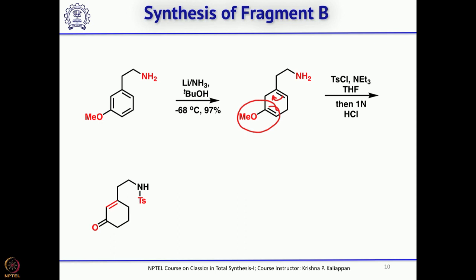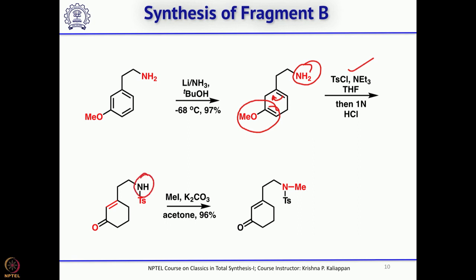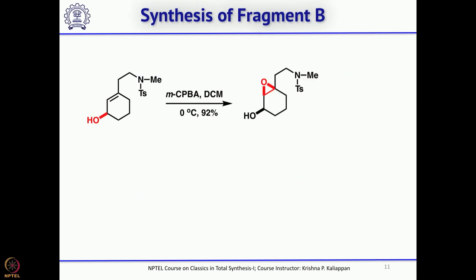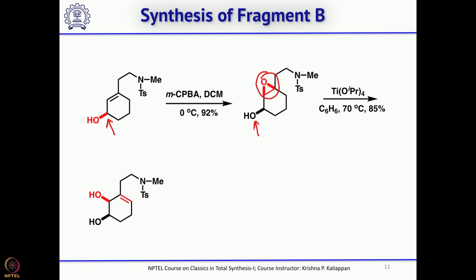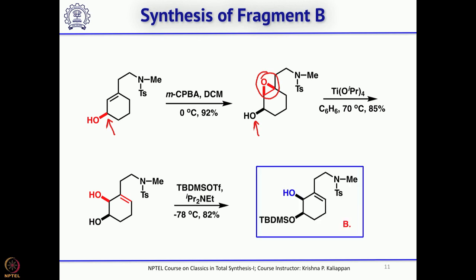You get this alpha-beta unsaturated ketone. During that process, using tosyl chloride you can protect the amine as NH-tosyl, then methylate NH to get N-methyl, as morphine requires N-methyl. The enone can then be reduced using Luche conditions — sodium borohydride and cerium chloride — to get the allylic alcohol. Using the allylic alcohol stereocenter, you can direct the epoxidation. The epoxide is delivered from the same side as the hydroxyl group, then treated with Lewis acid titanium isopropoxide to open the epoxide and give the allylic alcohol. Between these two hydroxyls, one can be selectively protected with TBDMS triflate — that is Fragment B.